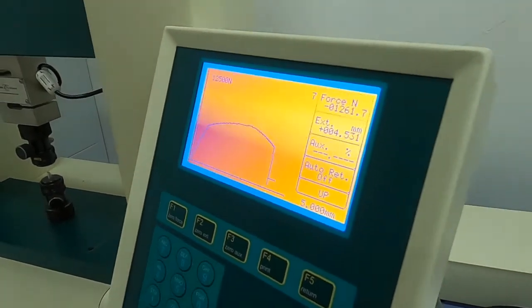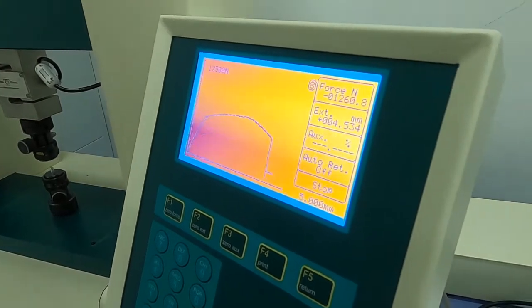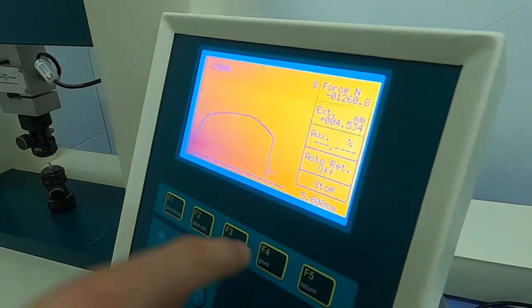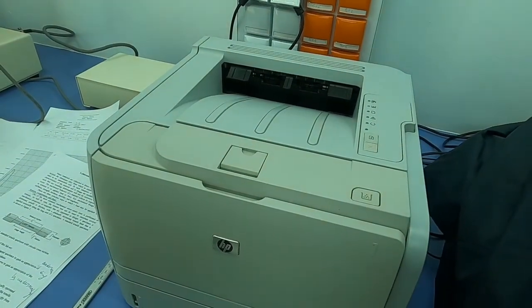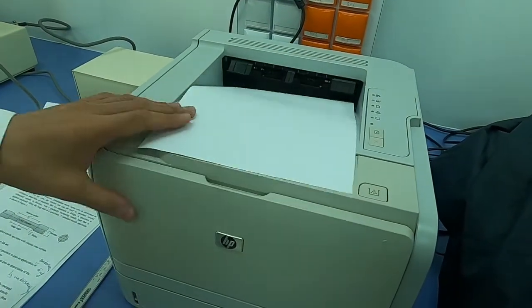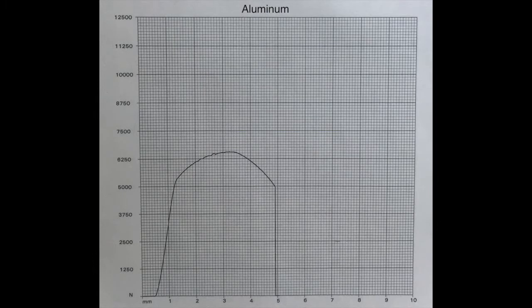After fracture, we have to stop our traverse system and then print. Here is our data. The vertical axis is the load force, and the horizontal axis is our extension.